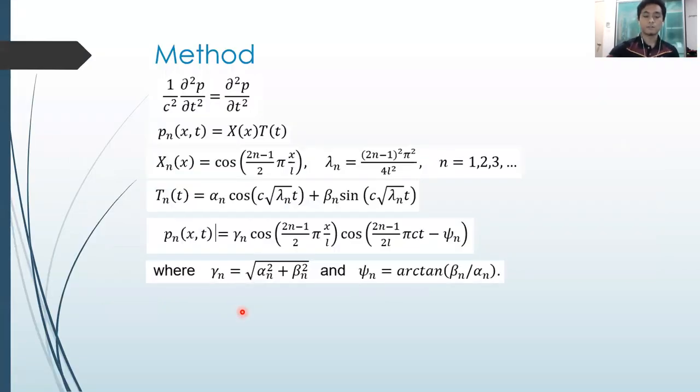In solving the problem, first we have to note that as stated, the pressure equation obeys the 1D wave equation, and this is the equation. We are solving this by using the separable variables method, in which the pressure equation we equate to the product of two functions: one function with only X as its variable and one function has only T.